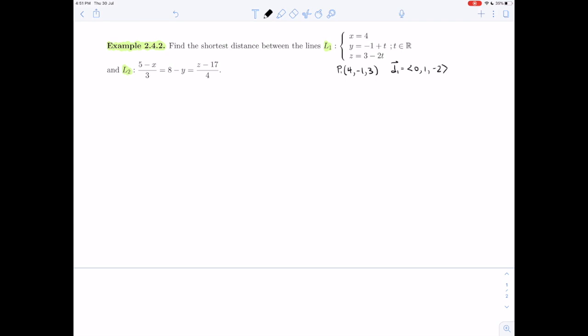L2 is in symmetric form, so we have to remember that this is all equal to T. And if we put it into parametric form to make it a little bit more readable, we will get x is 5 minus 3T, y is 8 minus T, and z is 17 plus 4T. And so we can see a point on L2, point P2 is (5, 8, 17), and D2 is (-3, -1, 4).